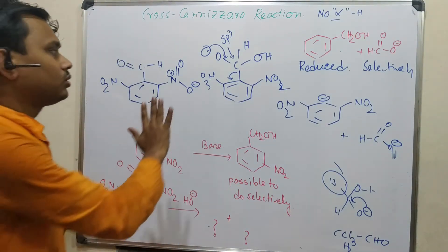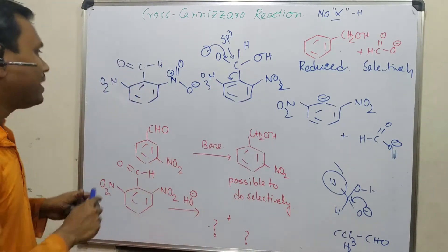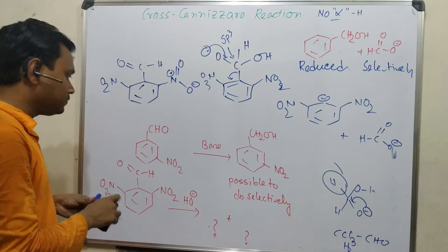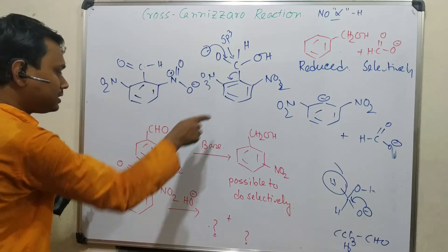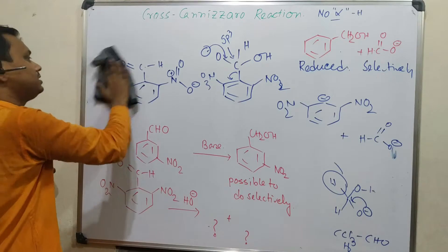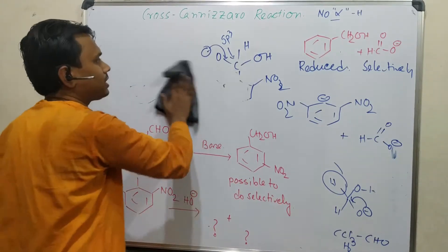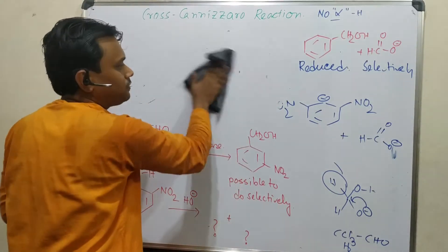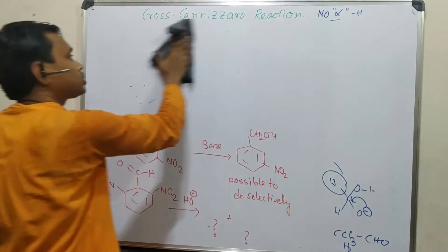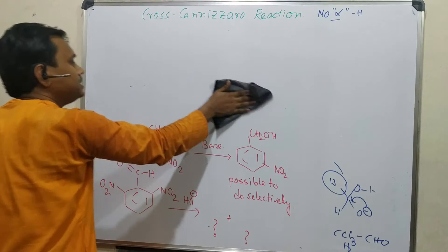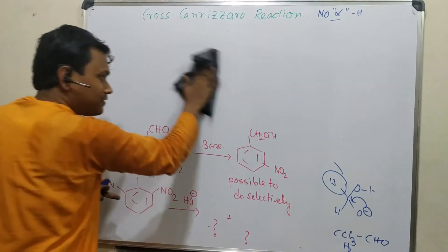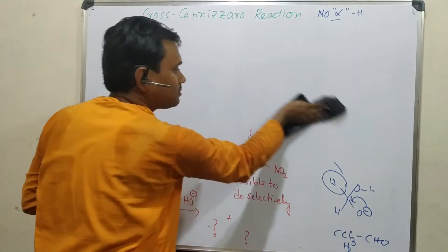This special ortho-dinitro effect only applies when both nitro groups are in the ortho position. If they are in the meta or para position, this factor does not operate — as I have explained in the example video. For example, 4-nitrobenzaldehyde undergoes the normal Cannizzaro reaction easily, as discussed in the previous video.